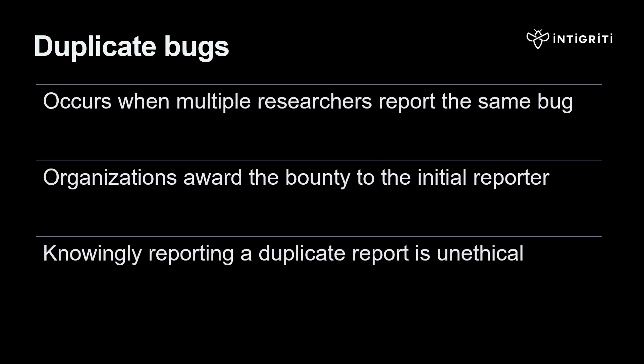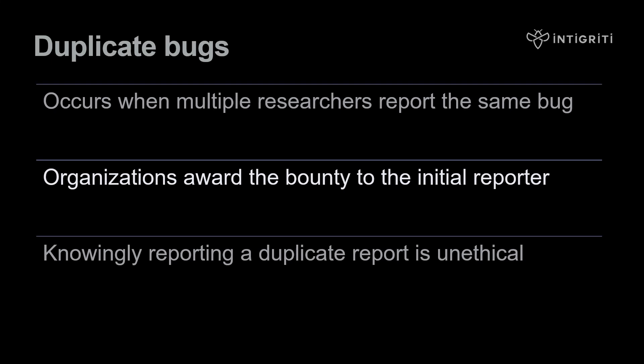The next topic is duplicate bugs. Duplicates, or dupes, occur when multiple researchers report the same vulnerability. Organizations will reward whichever researcher reported the bug first. Often, somebody reports a vulnerability and while it's being triaged or remediated, somebody else finds the same vulnerability and reports it, leading to a duplicate. Knowingly reporting a duplicate is considered unethical because it wastes the triage team's time and the program's resources, and can hurt your reputation as a researcher.